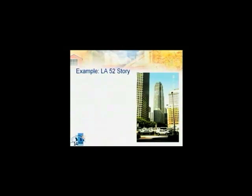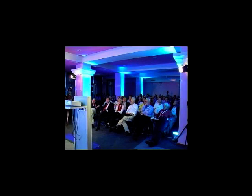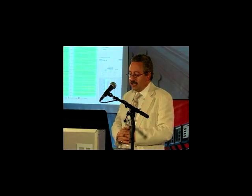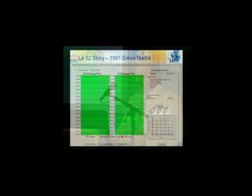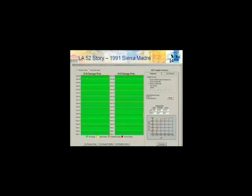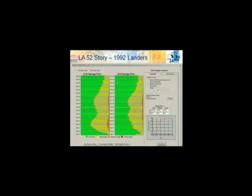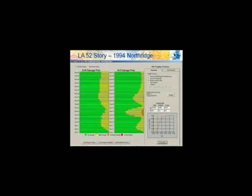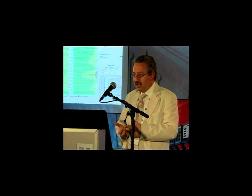Take a look at this 52-story building. We applied fragilities to it based on recorded motion — this is a CSMIP-instrumented building — from various earthquakes. For the 1991 Sierra Madre earthquake, the analysis shows this building should not have been damaged, and it was not — the result is green from floor 1 to floor 52 in both directions. For the 1992 Landers earthquake, there are probabilities of some non-structural damage, but no severe damage — and that was the case. For the 1994 Northridge earthquake, there are zones indicating the possibility of more severe damage. This is just an example, not the finished product, but these are the types of information you can get from building instrumentation and structural health monitoring that you cannot get otherwise.